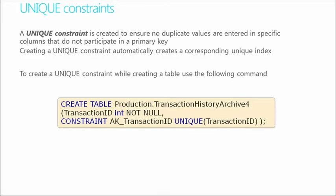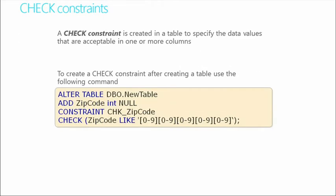I can only have one primary key per table, but there may be other columns where I want to enforce uniqueness. A UNIQUE CONSTRAINT allows us to enforce uniqueness on columns other than the primary key. So if we already have a composite primary key on driver's license and state code, and we also want to ensure social security numbers are unique, we can create a unique constraint on the social security column — enforcing uniqueness on that column without consuming the primary key.